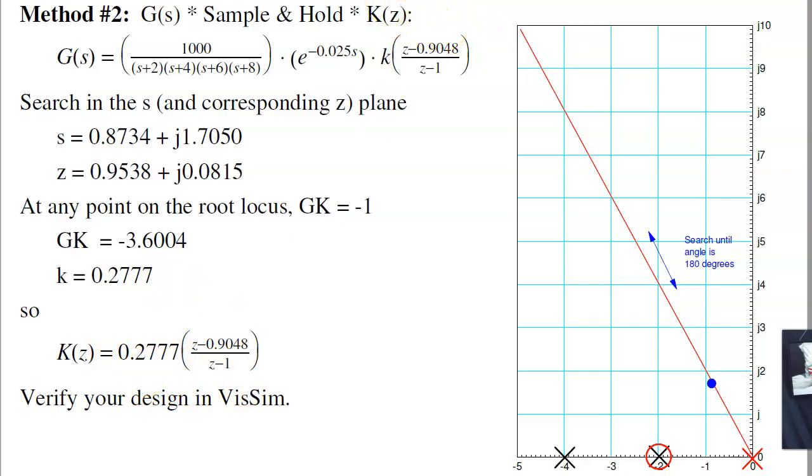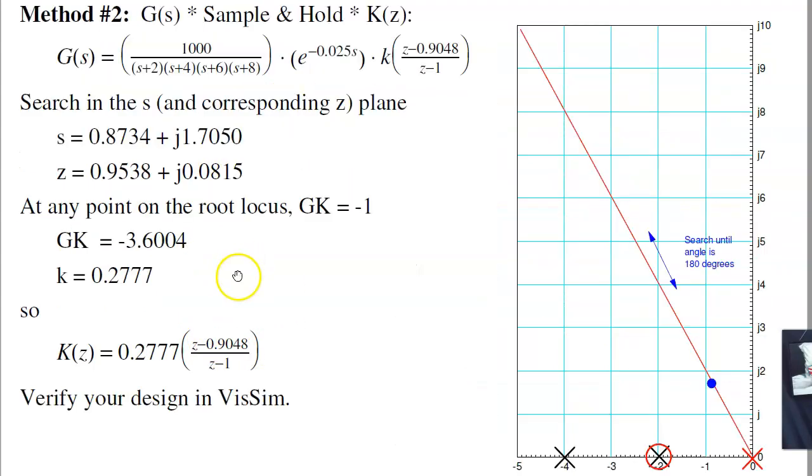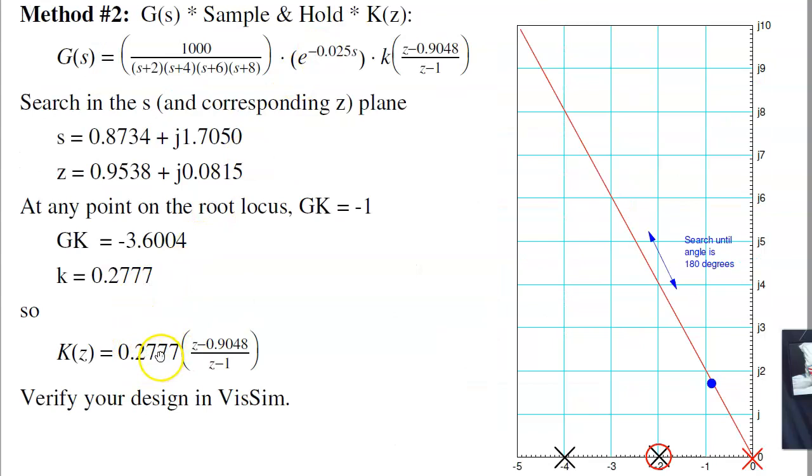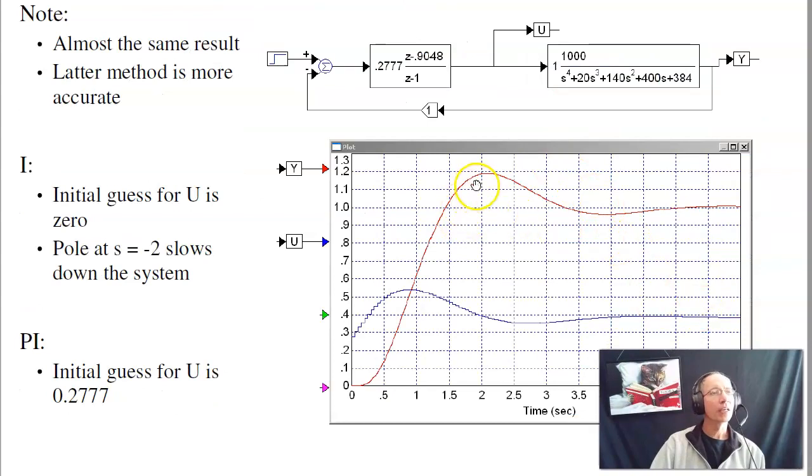That's the second method. And notice the two answers are really close. I've got the same zero, same pole. Same zero, same pole. 0.2777 versus 0.2908. It's close. This is actually more accurate. The acid test is throw it in VisSim. And if you add that compensator, sure enough, you get 20% overshoot.